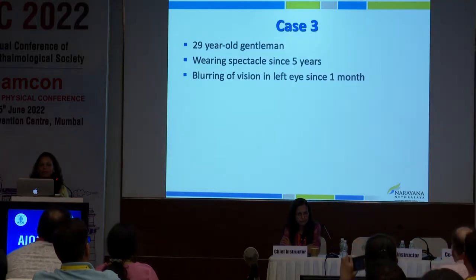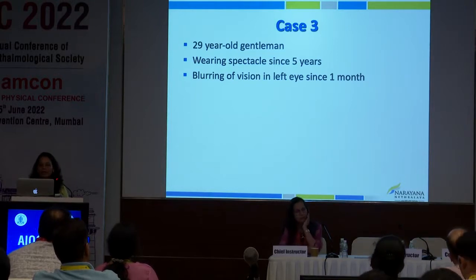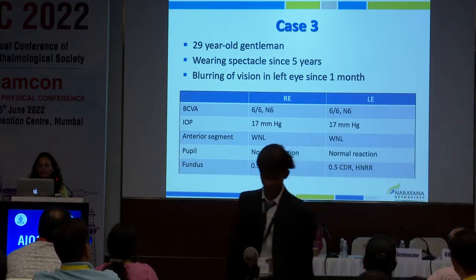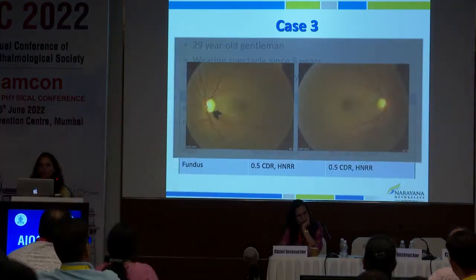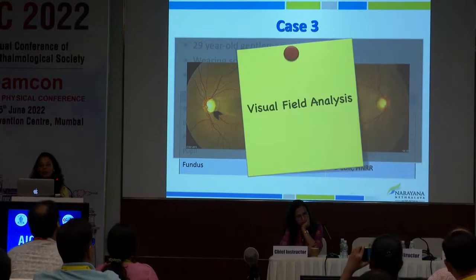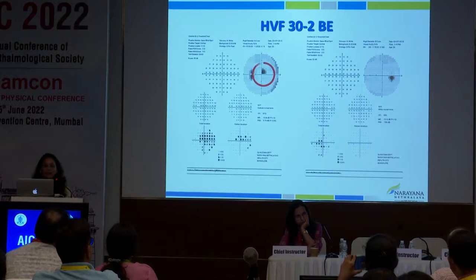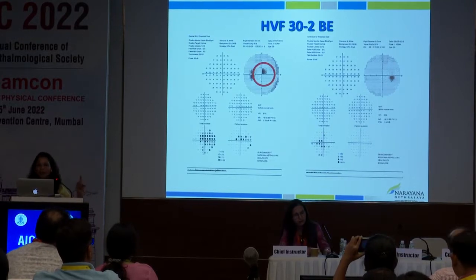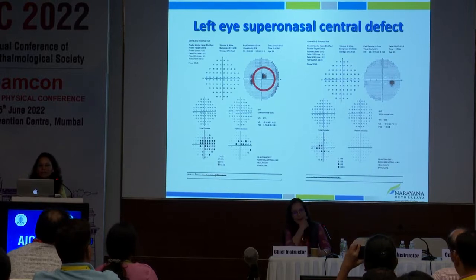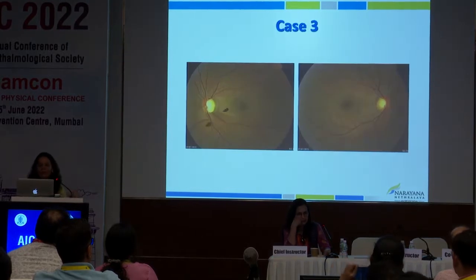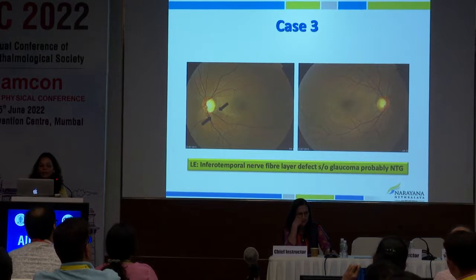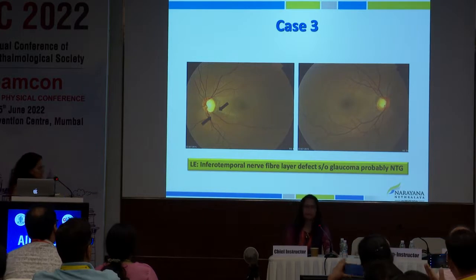Case three: a 29-year-old male with blurred vision and spectacles for five years. Careful disc examination showed subtle pallor. Visual field analysis showed a left eye superonasal central defect. On careful examination, a left inferotemporal nerve fiber layer defect was identified, suggesting glaucoma — probably normal tension glaucoma. The pressures were normal, making it hard to pick up, but the NFl defect is a classical sign.